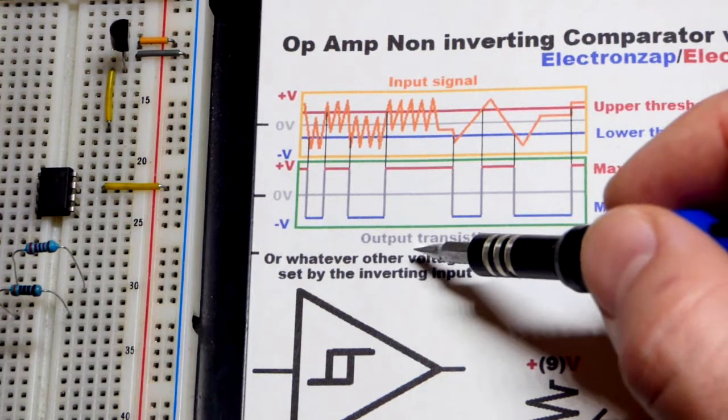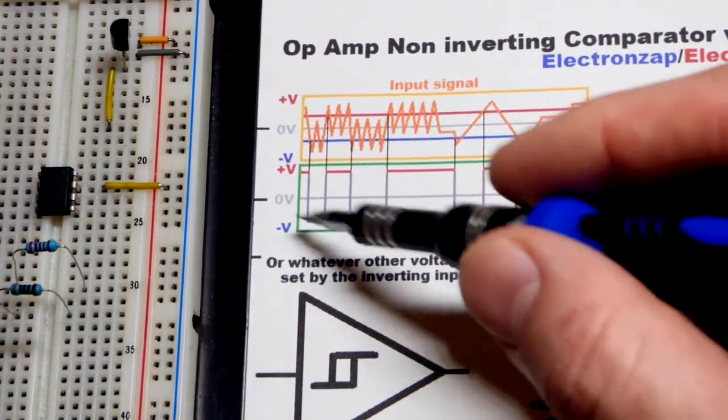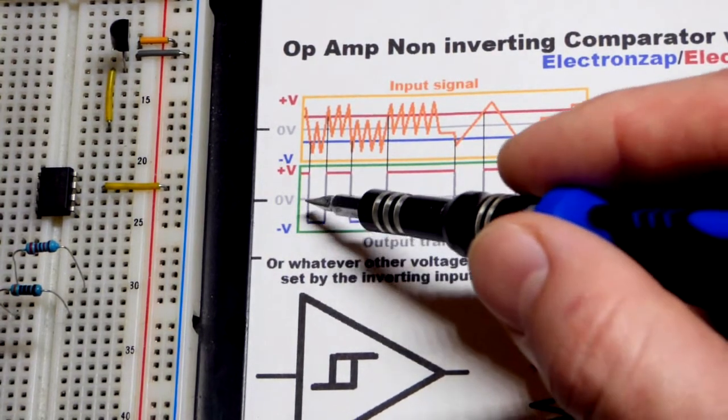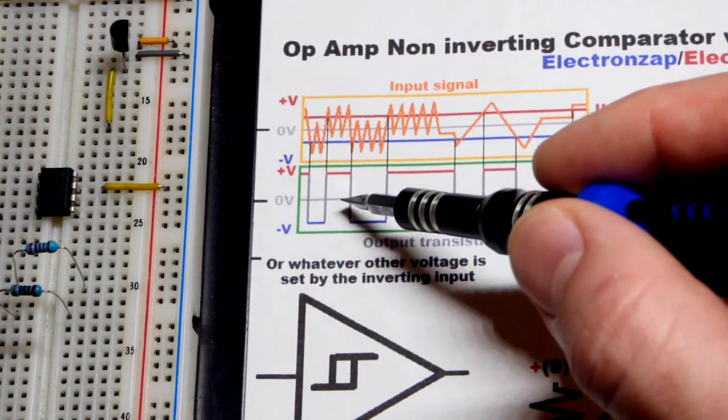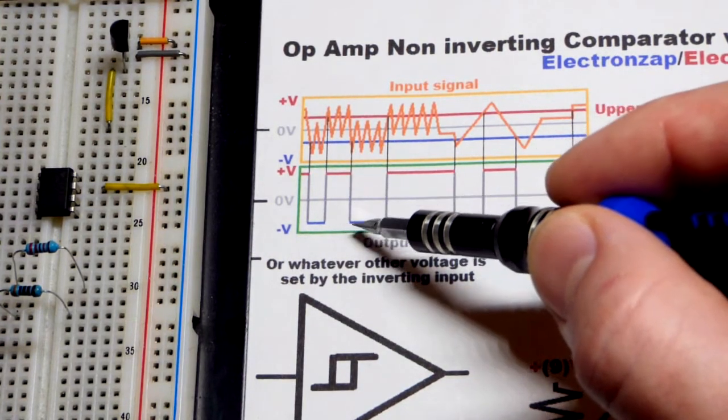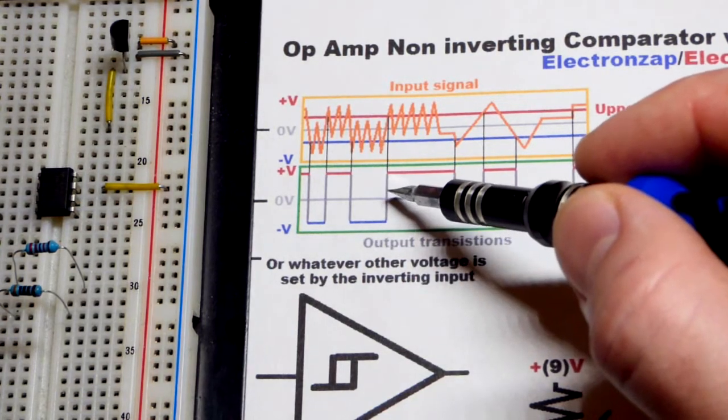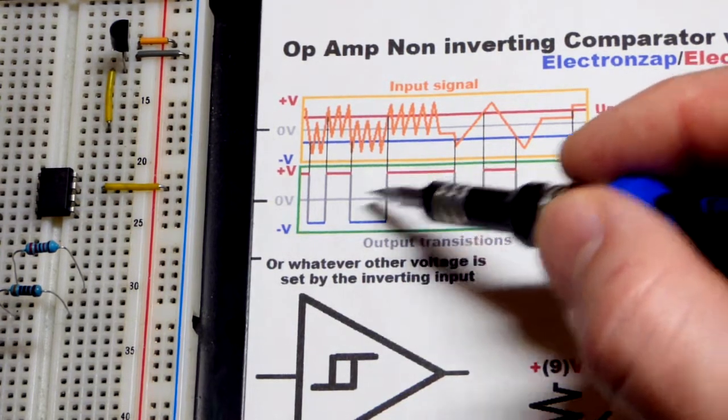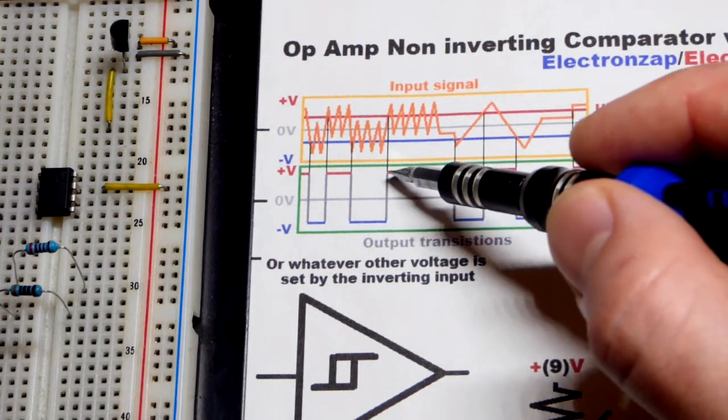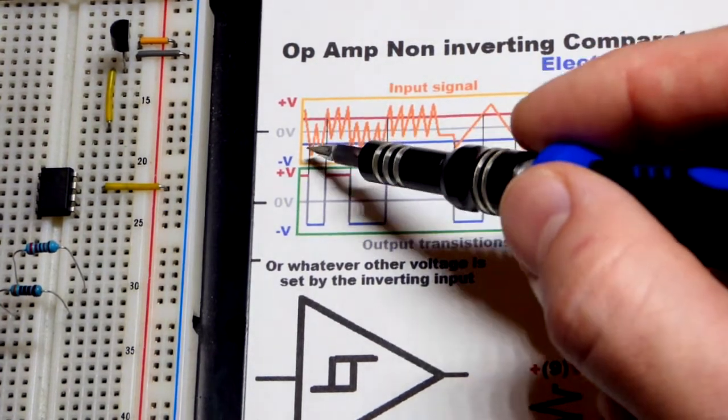The 741 op-amp doesn't go all the way to the rails, so you can see I left a little space there. Any small amount above or below would keep the output accordingly.